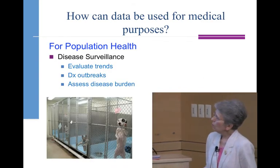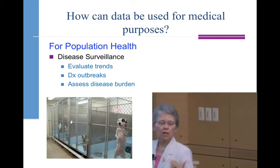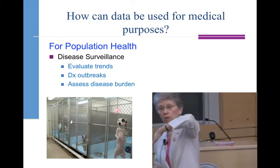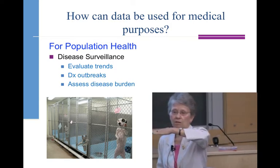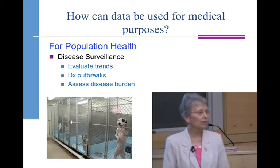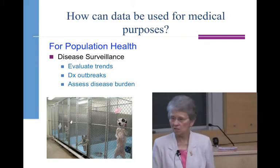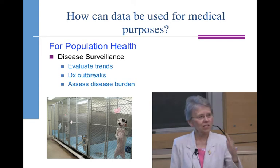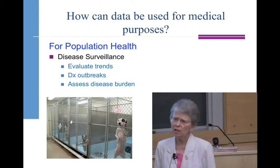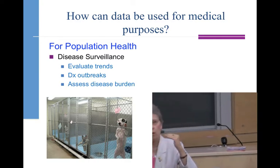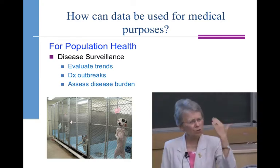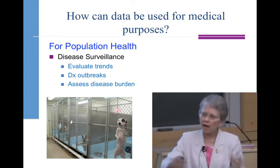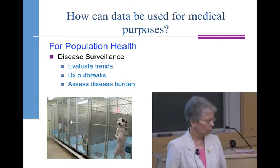Disease surveillance trends: is the level or frequency of disease in your shelter going up, going down, remaining static? Outbreaks: how do you know if you have an outbreak, especially for an endemic kind of disease that's usually around? How do you know if you have an outbreak if you don't know what the usual level is, especially as it begins to creep up? An early flag is: this week we are two percentage points higher than last, next week four percentage points higher — something's going on here, long before you have half the shelter sick.